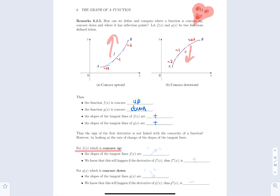All slopes are strictly positive, but on f the slopes are increasing. For the first function, which is concave up, the slopes of the tangent line are increasing. To check if something is increasing, we compute the derivative of f′ — the second derivative. If the second derivative is positive, f′ is increasing, which is linked to concave up.